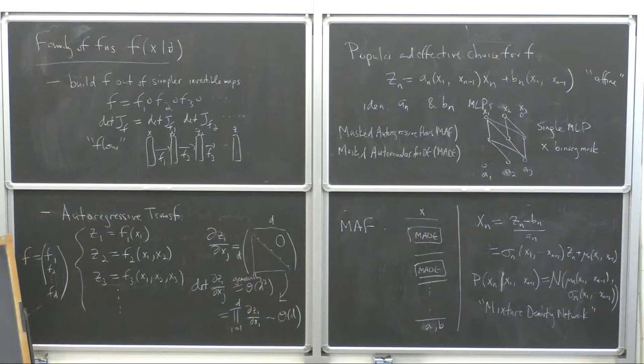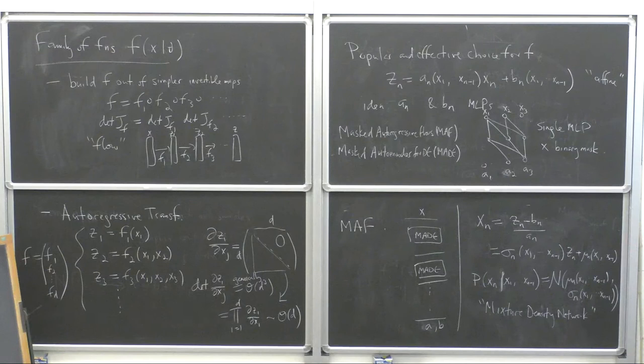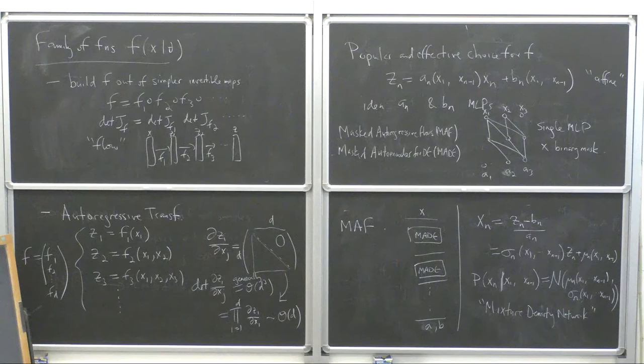Why is it called a masked autoencoder? I never fully understood that — it maps something to itself, I suppose. The MADE block is a single masked multilayer perceptron. And then a MAF chains together multiple MADE blocks, each being one masked MLP applied up to dimension Xn.